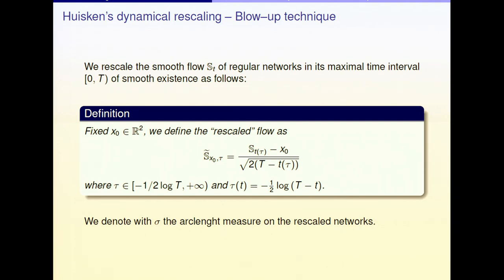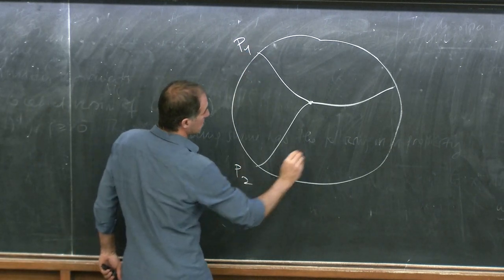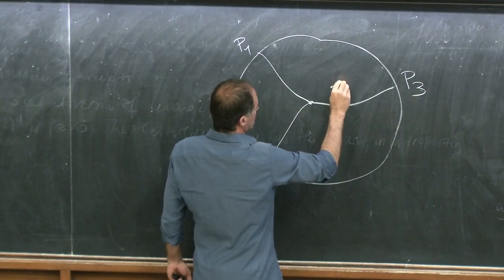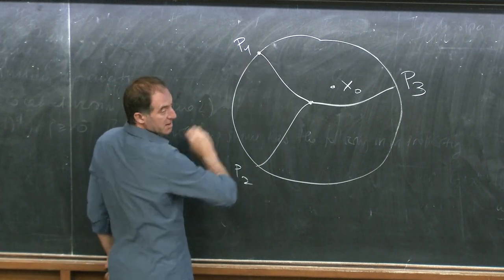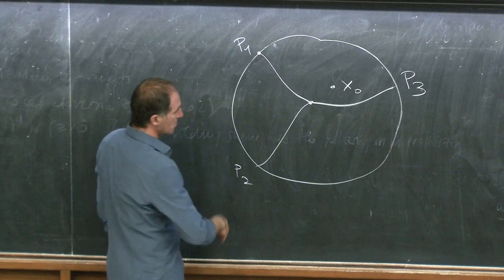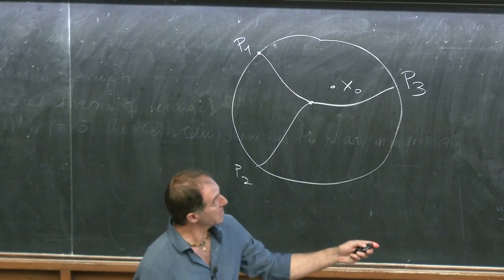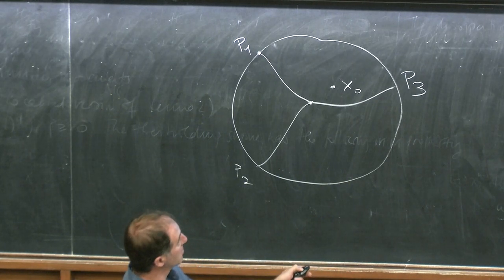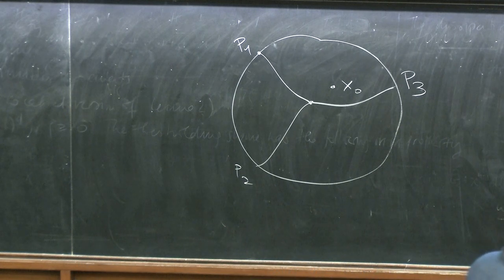We define the rescaled network S-tilde after choosing some fixed point x_0 in the plane — say a fixed junction, a fixed endpoint, or any fixed point in the plane. Then we rescale around this x_0 by the standard Huisken rescaling factor: one over the square root of 2(T - t(tau)). This gives a new flow defined on an infinite time interval.